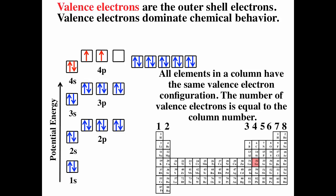Howdy. We've seen that the valence electrons are the outer shell electrons that dominate chemical behavior. Elements in the same column have the same valence electron configuration, so they tend to behave alike. The column number is equal to the number of valence electrons, as long as you're ignoring the transition metals.